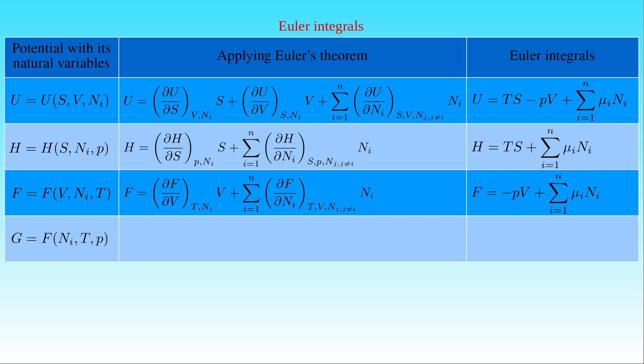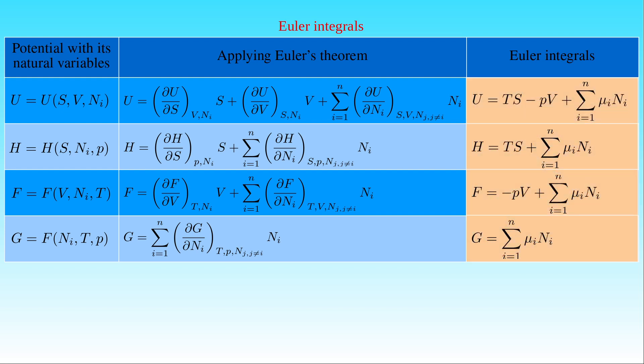Since the natural variables of the free enthalpy G are the number of particles Nᵢ, the temperature T, and the pressure P, the free enthalpy is a homogeneous function of degree 1 in its first variable only. By applying Euler's theorem, G can be written as the sum of the partial derivative of G with respect to Nᵢ at constant T, P, and Nⱼ (j ≠ i) times Nᵢ. Since this partial derivative equals μᵢ, the free enthalpy G is simply equal to the sum of μᵢ times Nᵢ. The expression for U is also known as the Euler equation in thermodynamics, and the four equations are called Euler integrals.